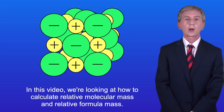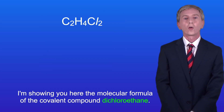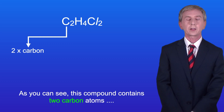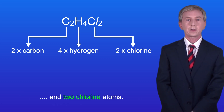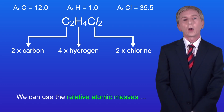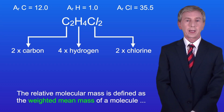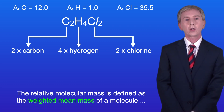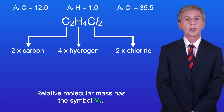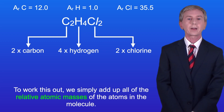Now in this video we're looking at how to calculate relative molecular mass and relative formula mass. The relative molecular mass is defined as the weighted mean mass of a molecule compared with one twelfth the mass of an atom of carbon-12, and relative molecular mass has the symbol Mr. To work this out we simply add up all of the relative atomic masses of the atoms in the molecule.